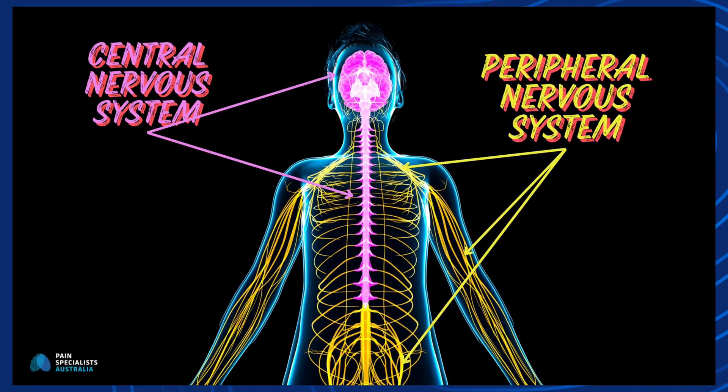There are different types of neuropathic pain: central neuropathic pain and peripheral neuropathic pain. Central neuropathic pain involves the brain and spinal cord being affected. Peripheral neuropathic pain occurs in the peripheral nervous system — the nerves outside the brain and spinal cord.